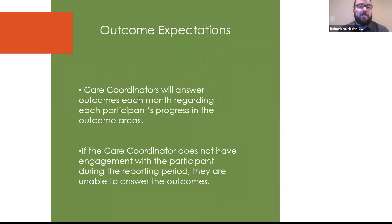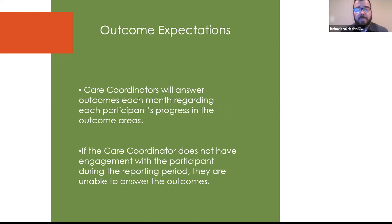Here are some highlights about our expectations for outcomes each reporting period. Care coordinators will answer outcomes each month regarding each participant's progress in the outcome areas. If the care coordinator does not have engagement with the participant during the reporting period, they are unable to answer the outcomes. At that point, the care coordinator should be entering an outcome of NA, which indicates that you were unable to assess — you did not have engagement.